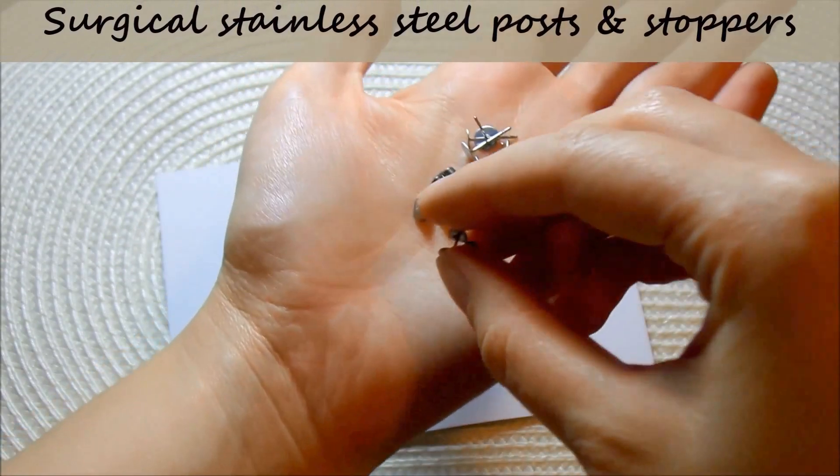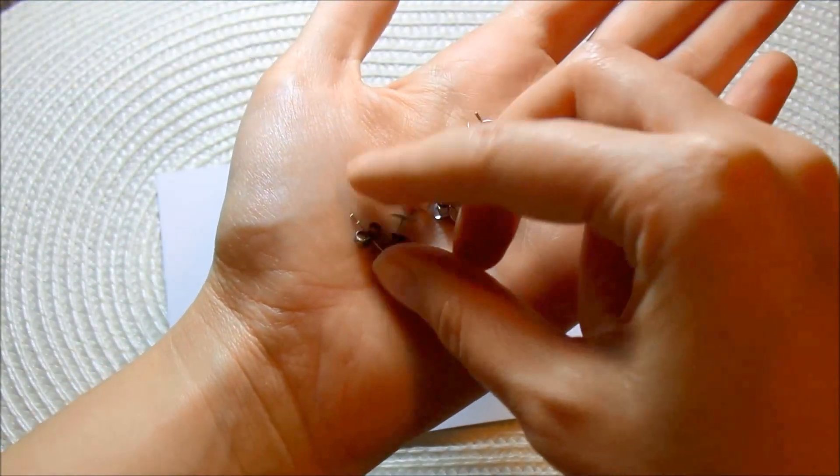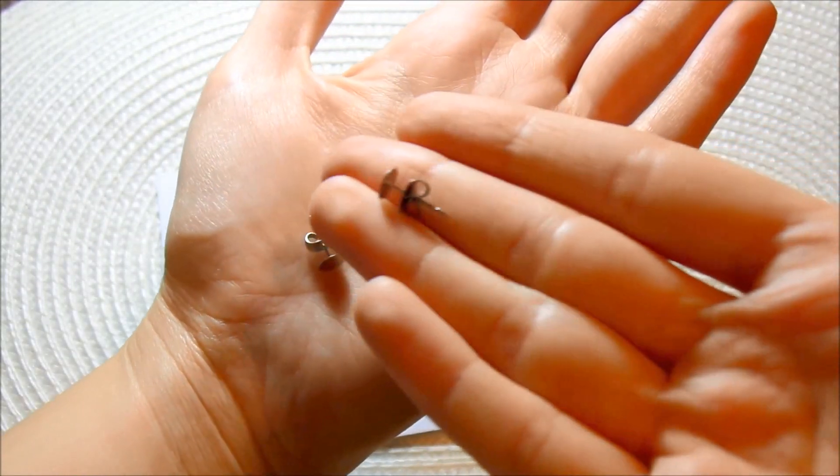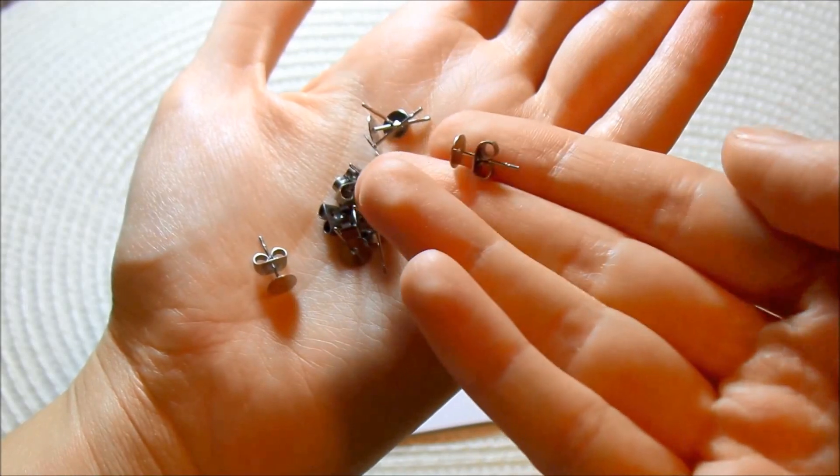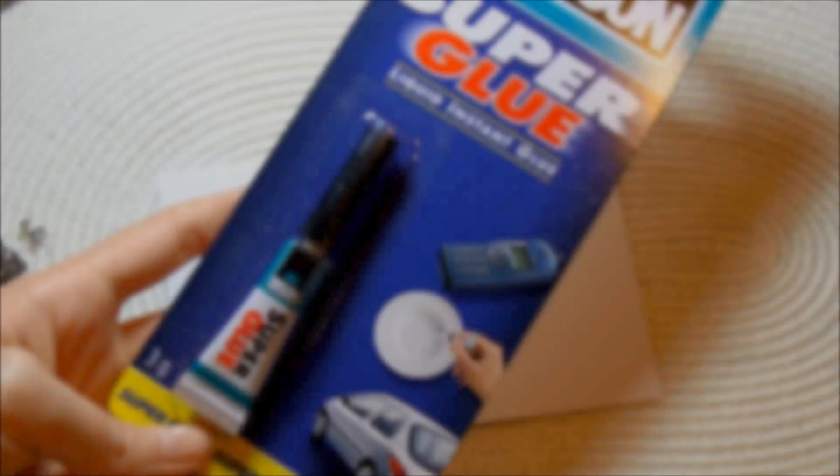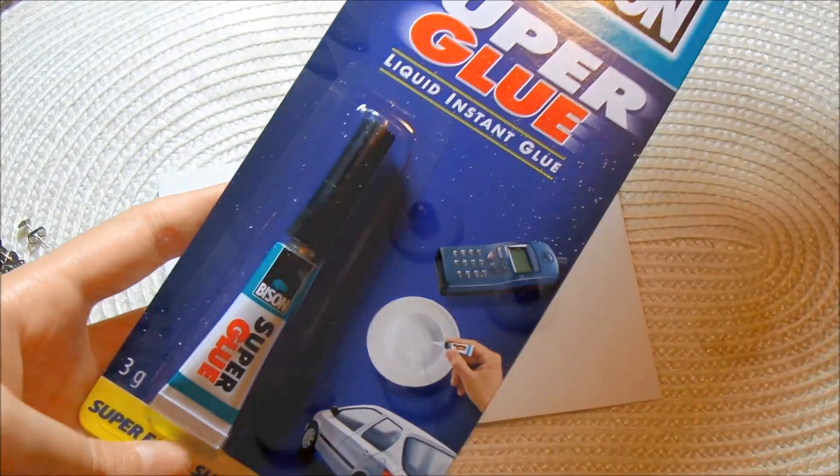For these earrings, I'm using surgical stainless steel posts and stoppers. These are the best to use because some people are allergic to metals, and plus they are not that expensive. Use a very strong glue to stick these posts on the back of the clay shapes.